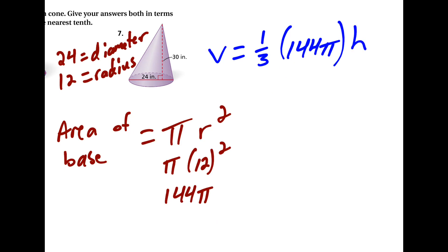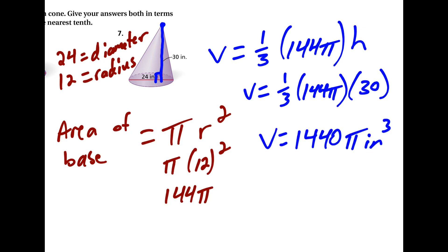So then we have to plug in the height, which is the distance between the vertex and the base so that it forms a 90-degree angle. And that is given here as 30 inches. So I can multiply straight across, and my first answer is 1440 pi inches cubed. And if I actually multiply out the pi and round to the nearest tenth, here's what I get.